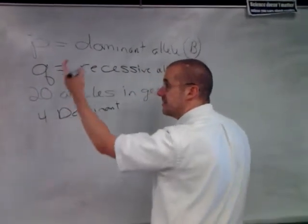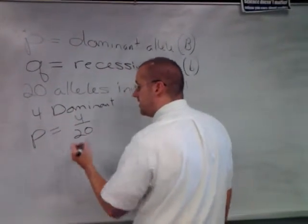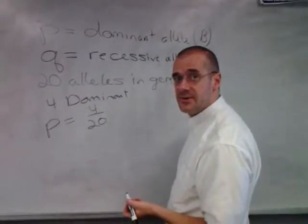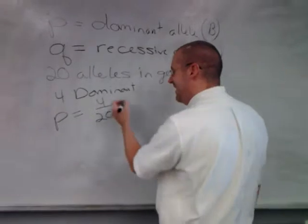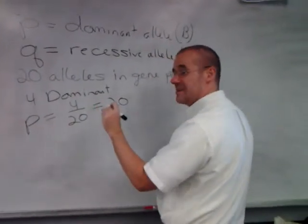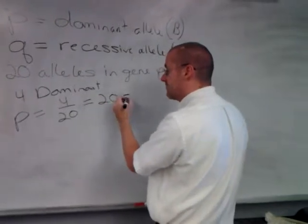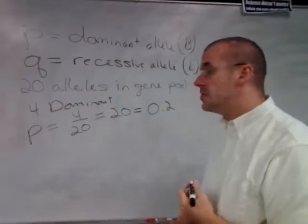And the frequency, P, would be 4 over 20, which happens to be, help me out, Shaylee, 20%? No, yeah. Are we sure? No. 4, yeah, 20%. Okay. So it's 20%, but if you're going to do a ratio, it's 0.2.